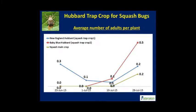Our research suggests that squash bugs land and explore the main crop of yellow squash, but they tend to leave, being attracted by the Hubbard squash planted in the perimeter. Squash bugs feed, mate, and lay a very high number of eggs in the trap crop, which significantly reduces the risk to yellow squash.